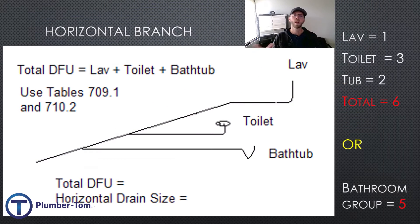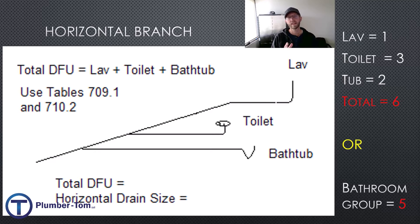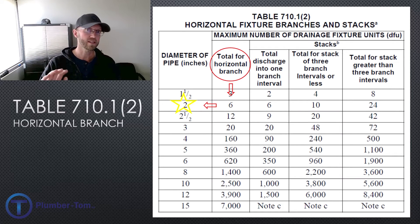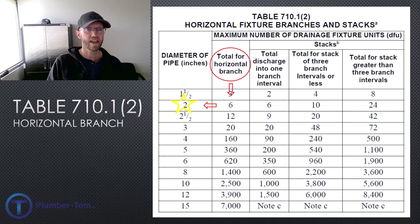Let's look at a smaller example — a simple horizontal branch catching a bathroom group. Sizing separately: one drainage fixture unit for the lav, three for a residential tank-type toilet, and two for the tub, for a total of six drainage fixture units. Note that you also have the option of using five drainage fixture units for a bathroom group, since it's unlikely all fixtures are used simultaneously. Taking five or six DFU to the horizontal branch column in the table: it's more than three and less than or equal to six, so coming left we find a two-inch pipe.